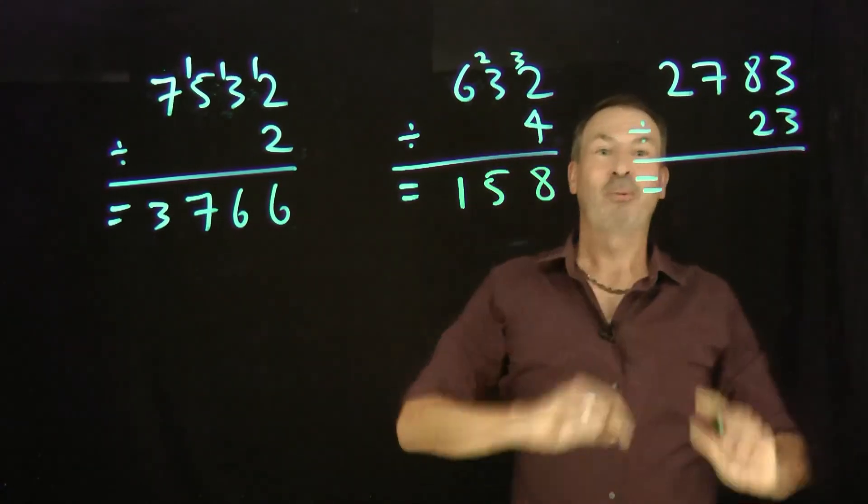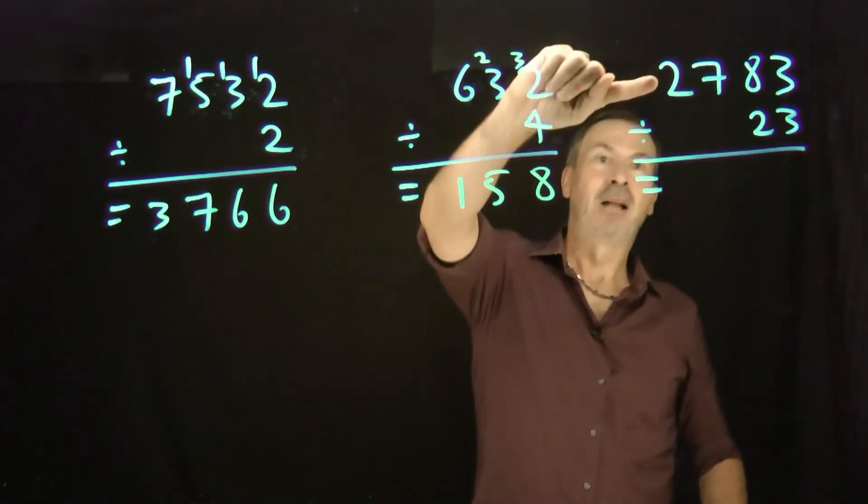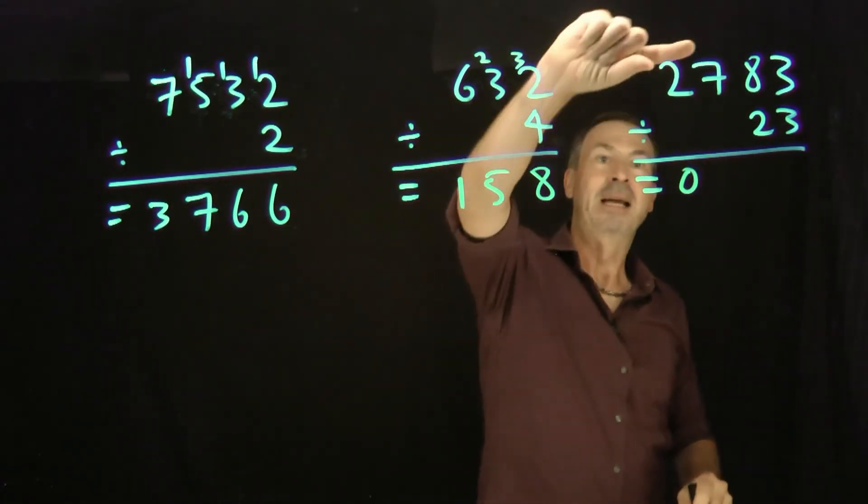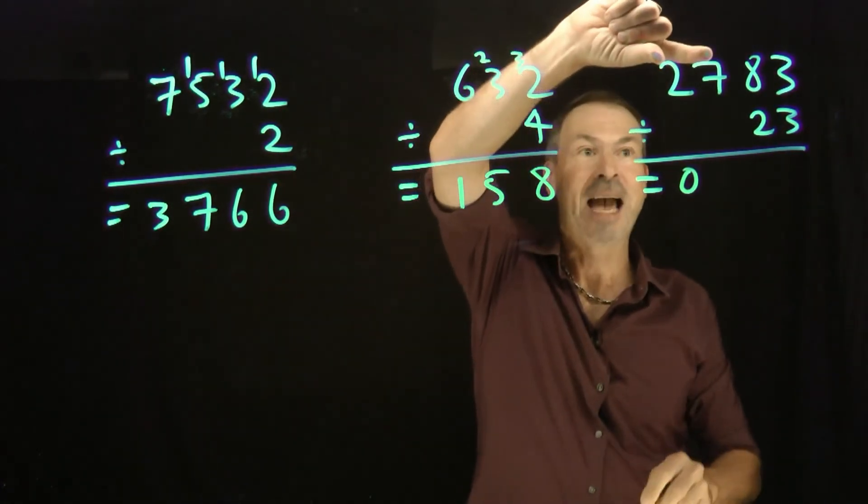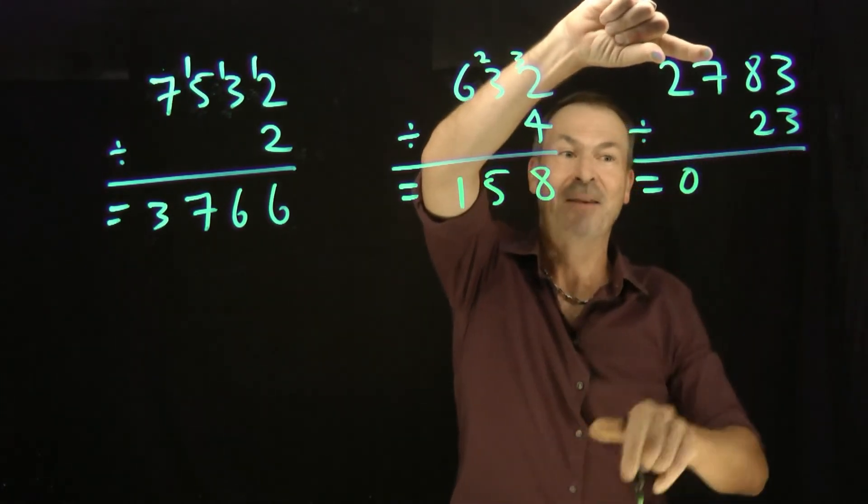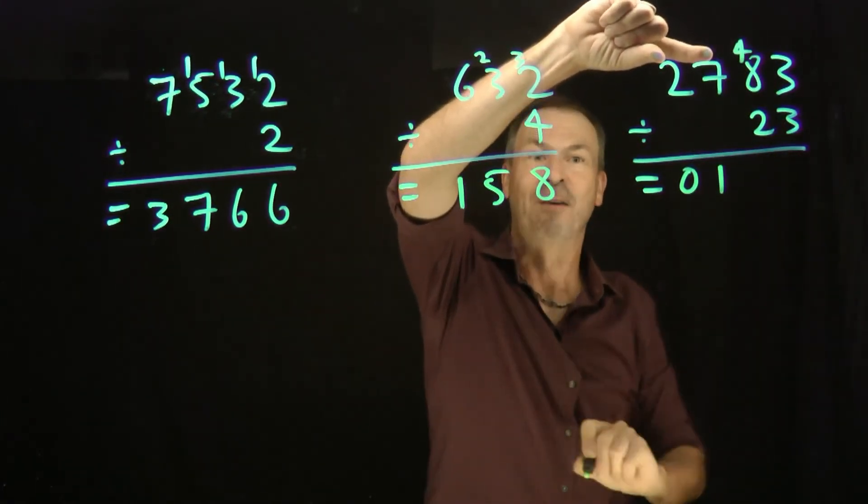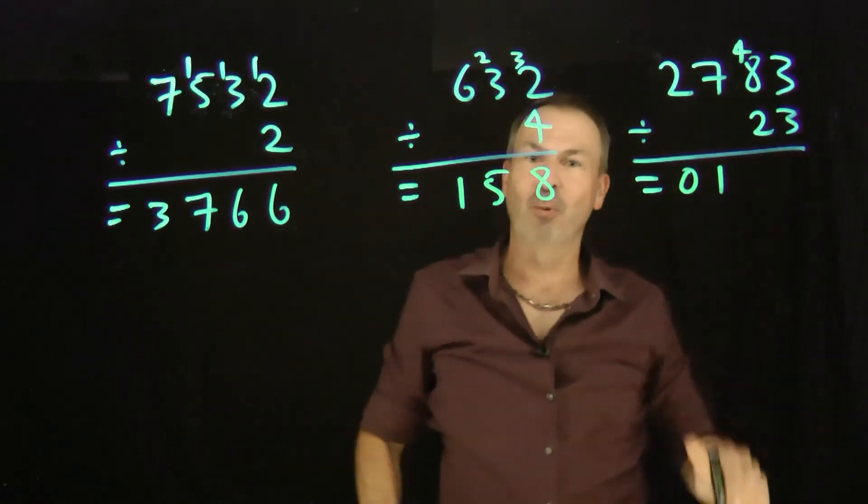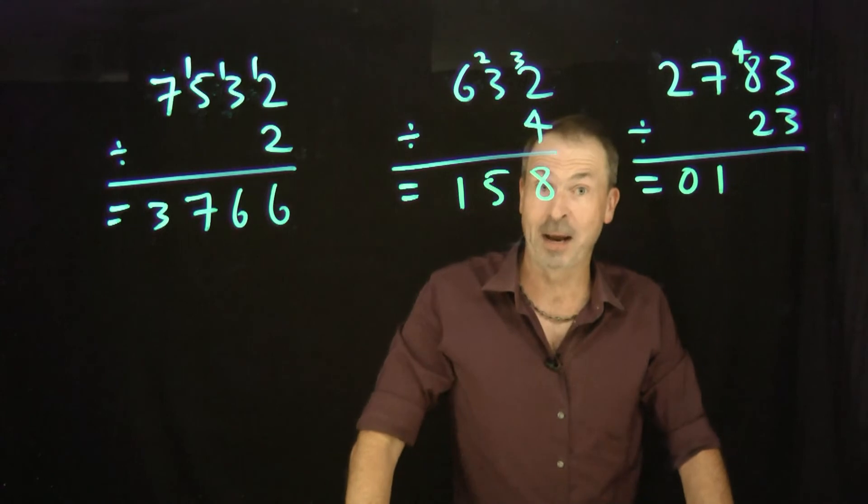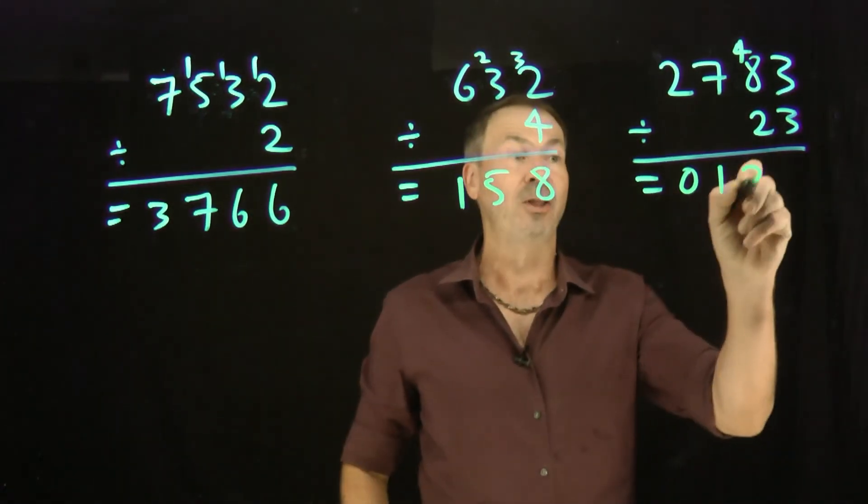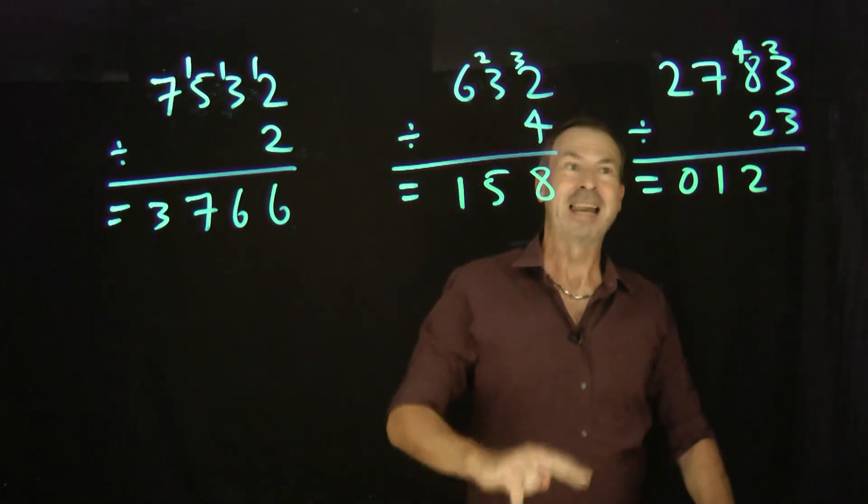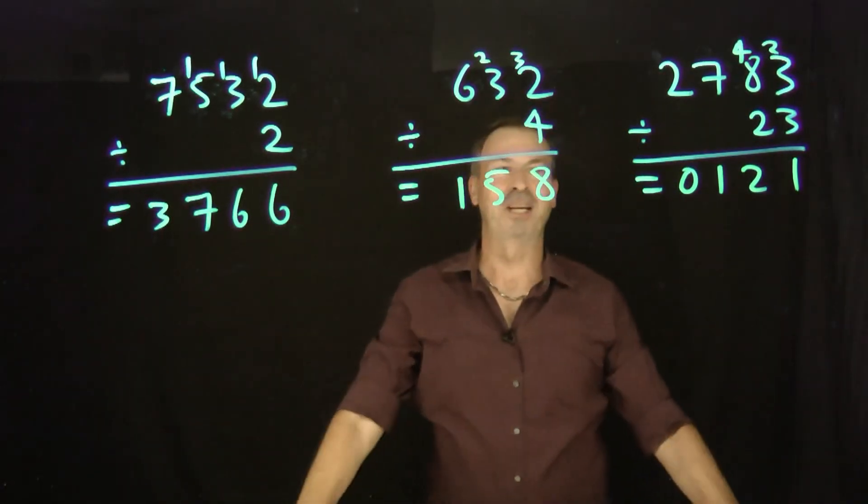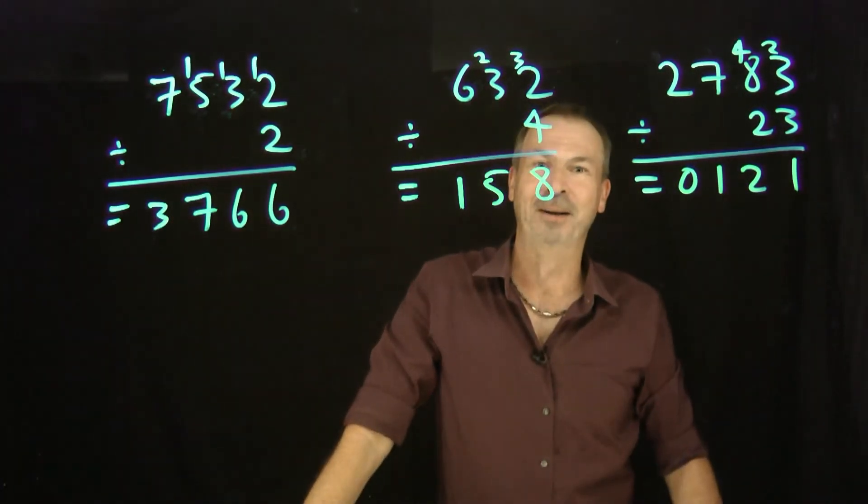OK. 2783 divided by 23. Look at the first digit. 2. How many times does 23 go into 2? It doesn't. Don't bother doing it. Now think 27. OK. How many 23s are in 27? There's going to be 1 with 4 left over. Now think of that 8 as to change to 48. How many 23s are in 48? Two 23s is 46. That's close. Two of them with 2 left over. And how many 23s do I see in 23? 1. 2783 divided by 23 is 121. Whoa!